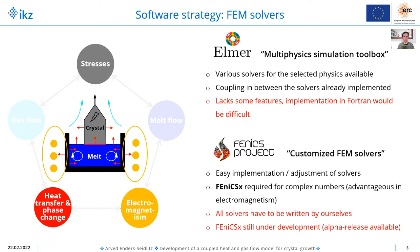Therefore I also use FEniCSx for customized FEM solvers. It is easy to implement solvers in FEniCS because it's all written in Python. However, I require the newest version which is called FEniCSx because I need complex numbers to solve my electromagnetism problem. The disadvantage is that it is not working out of the box, so all solvers have to be written by yourself, and FEniCSx is still under development so there are quite some changes in the API which makes development difficult when you want to move to a new release.